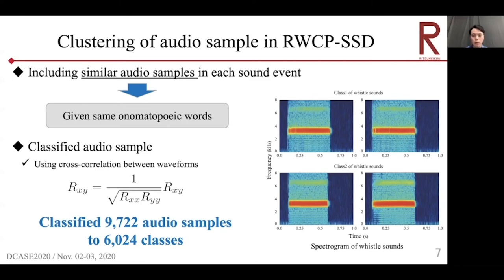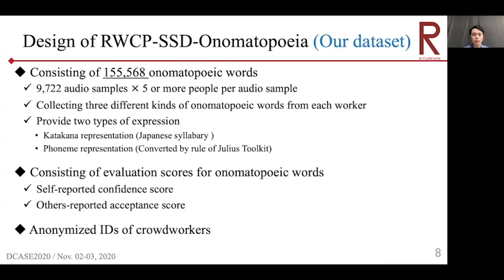Next, let's move on to an overview of our dataset, RWCP SSD Onomatopoeia. RWCP SSD Onomatopoeia consists of 155,568 onomatopoeic words. Each audio sample has onomatopoeic words from five or more crowd workers, and each crowd worker gave three different kinds of onomatopoeic words. Onomatopoeic words were collected from Japanese speakers in katakana. We also provide onomatopoeic words converted to phonetic representation using all the conversion rules of the speech segmentation toolkit Julius. RWCP SSD Onomatopoeia also contains two types of variation scores for onomatopoeic words, the details of which will be explained later.